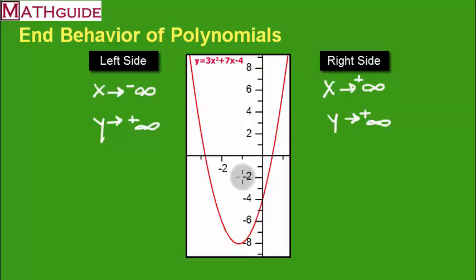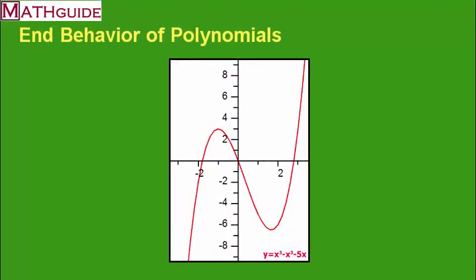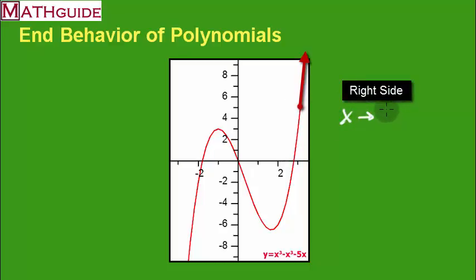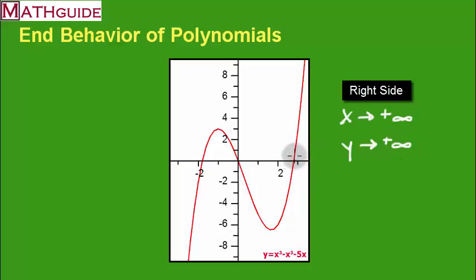Let's take a look at another example. Here's another curve with different end behavior. On the right side of this graph, the curve is going up and going right forever. So we'd say x is going to positive infinity because the curve goes right forever, and as we move to the right, the y values are getting bigger and bigger. Trace your finger along the curve — your finger is going right and it's going up forever.